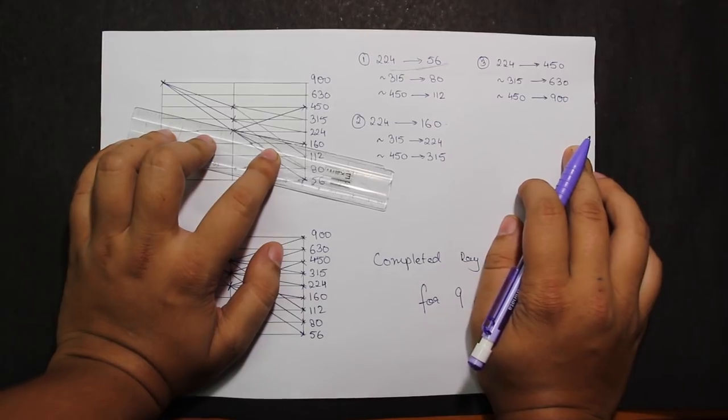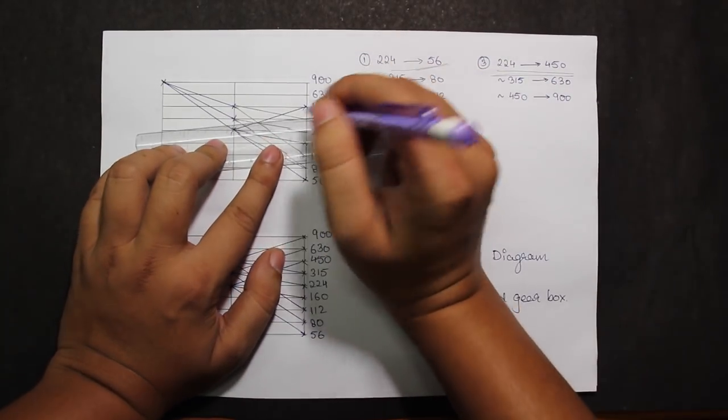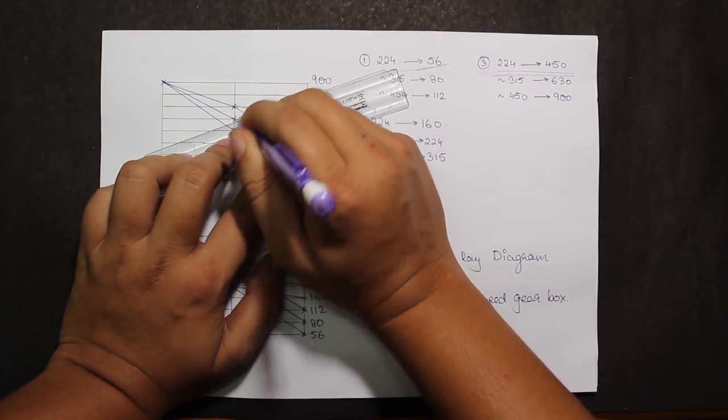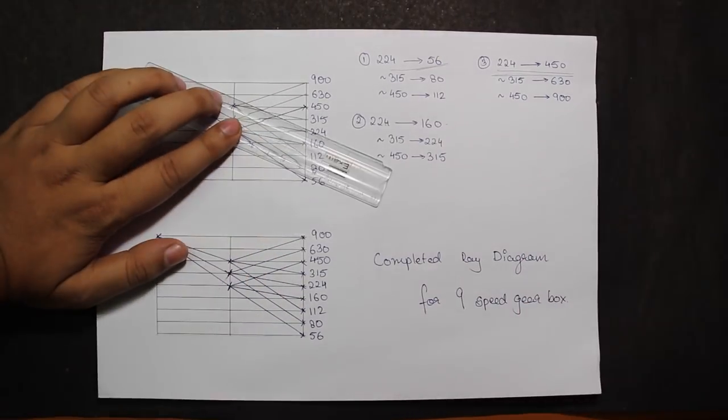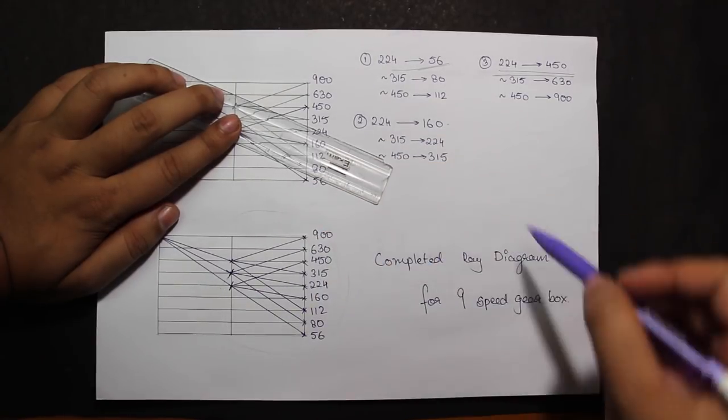Next, my base reference would be the line 224 to 450. So the speeds I'll be getting is 315 to 630 and 450 to 900. This will result in the completion of the ray diagram for 9-speed gearbox, looking something like this.